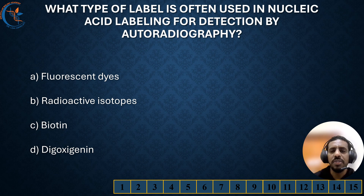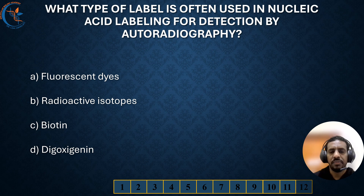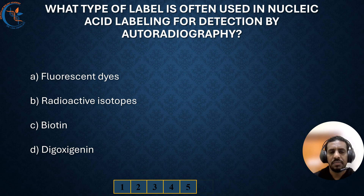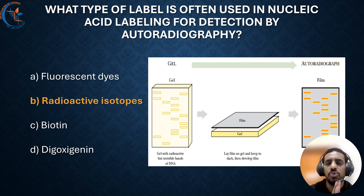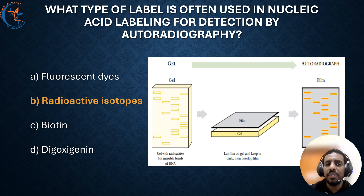What type of label is often used in nucleic acid labeling for detection by autoradiography? The correct answer is radioactive isotopes. Radioactive isotopes are commonly used to label nucleic acid because they provide highly sensitive detection of specific sequences. A radioactive isotope is attached to the nucleic acid making it detectable. Then the labeled nucleic acids are placed on X-ray film or phosphor screen.